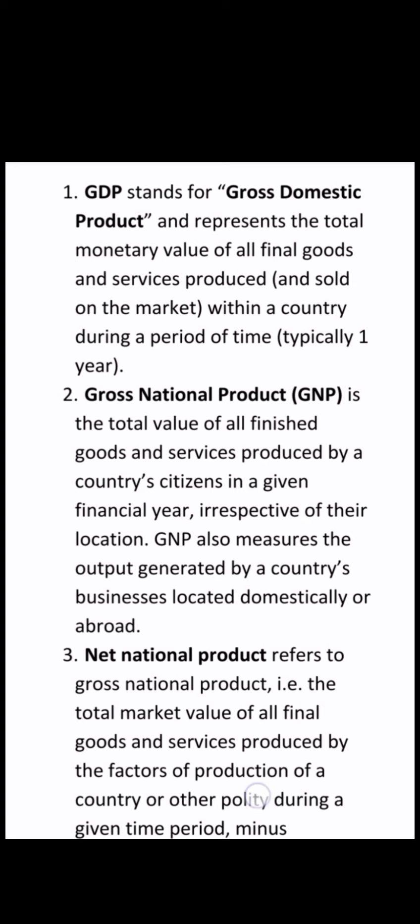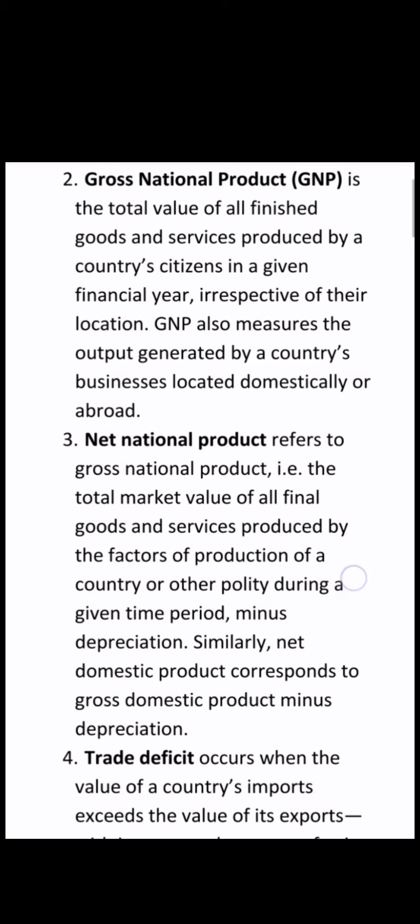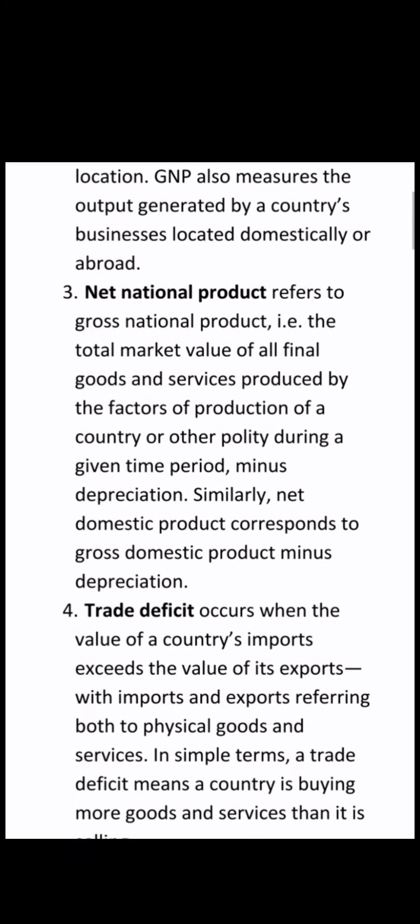The second concept is Gross National Product. Gross National Product is basically GDP plus all the income that we earn from abroad. The third one is Net National Product. It refers to the total market value of all final goods and services produced by the factors of production of a country during a given time period, minus depreciation.